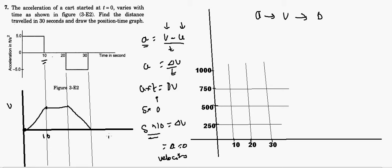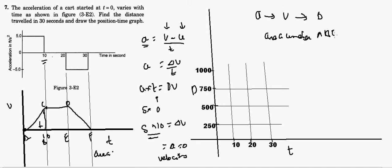Now we have the velocity-time graph. We'll draw the position-time graph. I'll divide it into regions A, B, C, D, E, F. Remember: the area under the velocity-time graph gives you the displacement. First, find the area under triangle ABC. The base is 0 to 10, so base = 10.